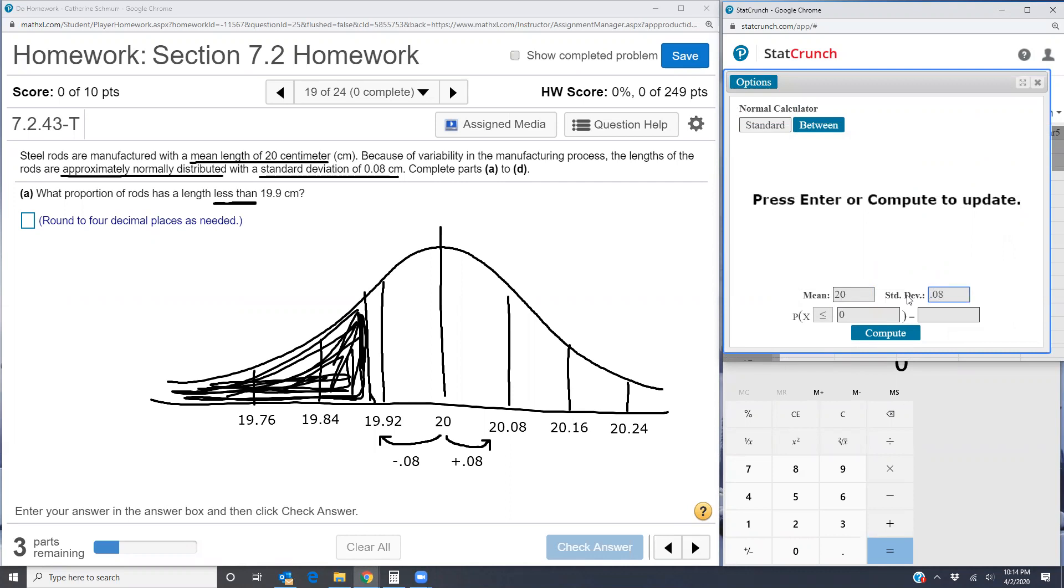Now less than normally means strictly less than. But because we have a continuous distribution, I can get the same proportion or probability by using a less than or equal to. So I'm going to put x is less than or equal to 19.9.